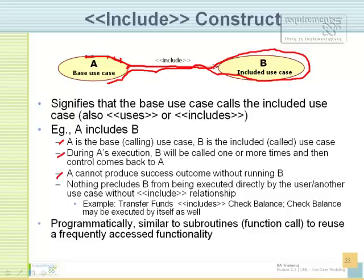Also remember that B can be run multiple times while A is running — it depends on your scenario, like how many times you have to check balance. Also, nothing prevents B from being executed directly. The example is: transfer funds includes check balance, but I can also just run check balance because I want to see my balance. So check balance can run as an included use case and also as a base use case in another scenario. Included doesn't mean it's always a slave waiting for another use case to call it — it can be called directly.